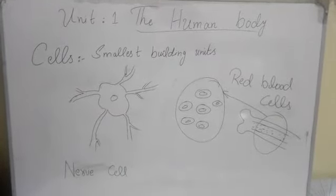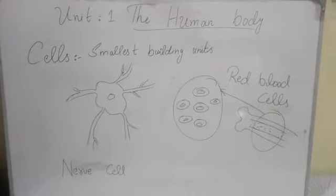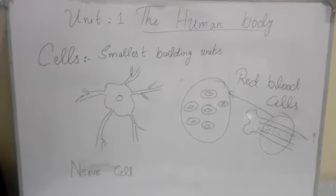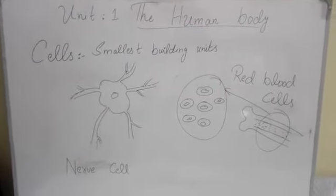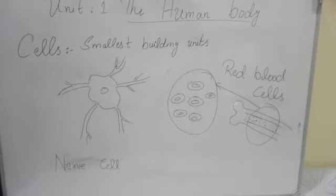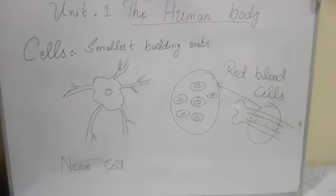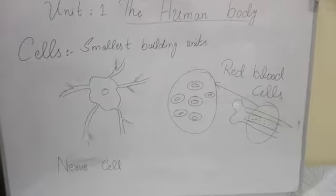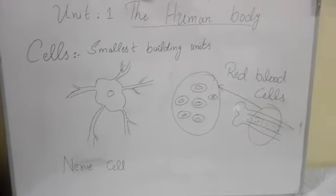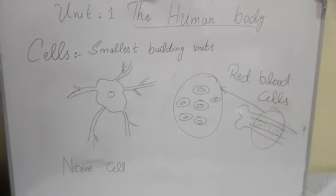In our body, there are so many cells we cannot count them. Our full body is made up of cells. Some are dead cells and some are living cells, but in all living organisms, cells are the smallest unit.